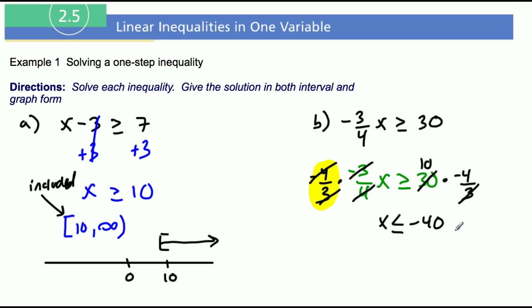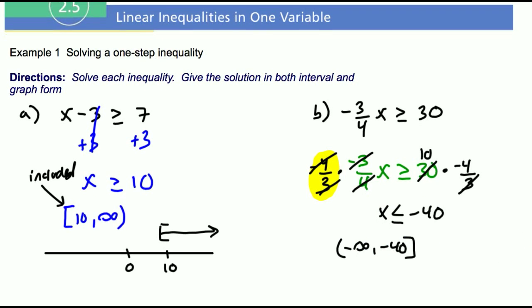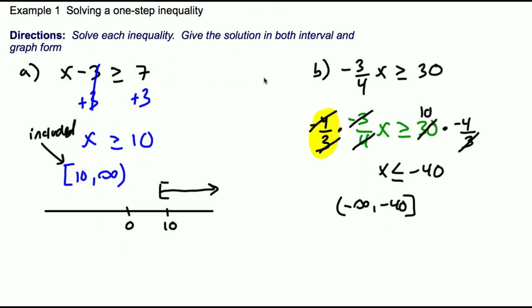The answer in interval notation: this means x is less than negative 40. Well, numbers that are less than negative 40 start from negative infinity, so it starts from negative infinity and goes to negative 40 bracket. Maybe you want to start with the graph; maybe the graph makes a little more sense before you go straight into the interval notation.